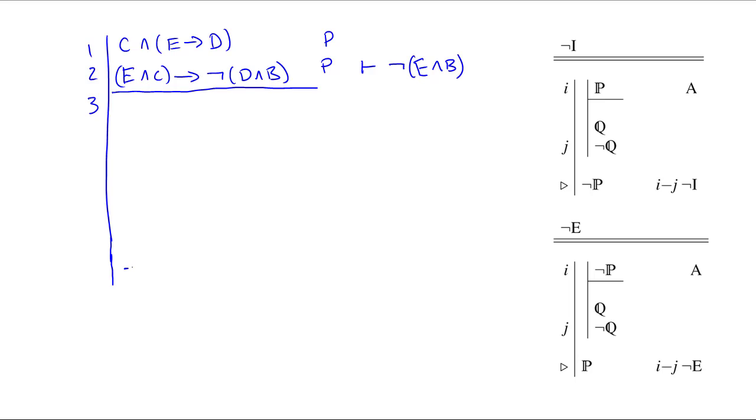We'll put our goal in down at the bottom of the derivation. And since the main connective of this goal statement is a hook, it's very likely that we're going to use hook introduction to derive it. That means we're going to need a subderivation, and the auxiliary assumption of that subderivation should be exactly what we want just with the hook removed. So if we want hook parenthesis E and B, then we should assume E and B. Now remember the auxiliary assumption can only be a single line, one formula, but that formula can be as complex as we need it to be.